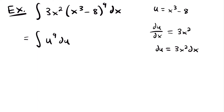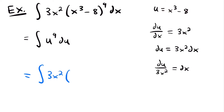Another way you could do this is to solve directly for dx. If you divide both sides by 3x squared, you get du divided by 3x squared equals dx. Plugging this in for dx: the integral becomes 3x squared times u to the 9th power times du divided by 3x squared. The 3x squareds cancel, leaving you with u to the ninth power du — the same result. I just wanted to show this method so you can understand the process of u-substitution.